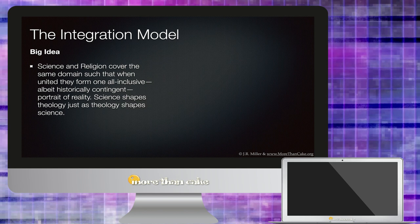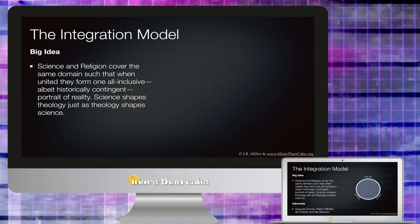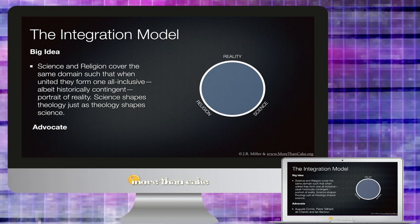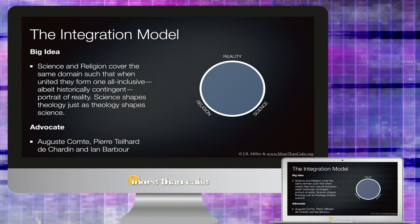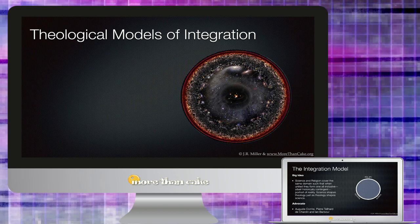Finally we have the Integration Model. And the big idea here is that science and religion are said to cover the same domain, such that when united they form an all-inclusive, albeit historically contingent, portrait of reality. Science shapes theology just as theology shapes science. So again here what we have is that religion and science come together inside this one reality and they give us a whole new perspective together, and both are sort of evolving and shaping one another as time goes on and as new discoveries occur.